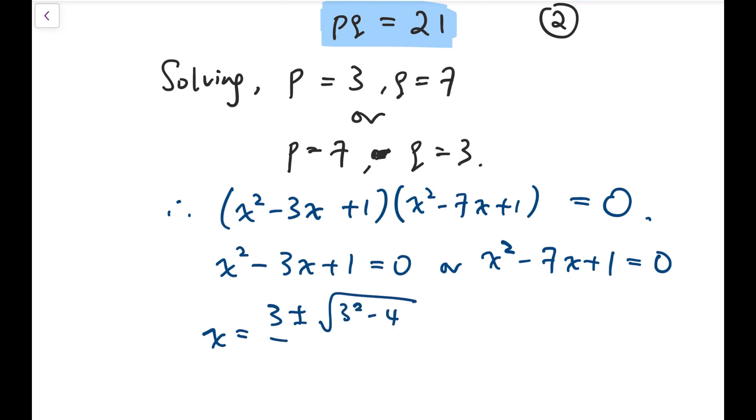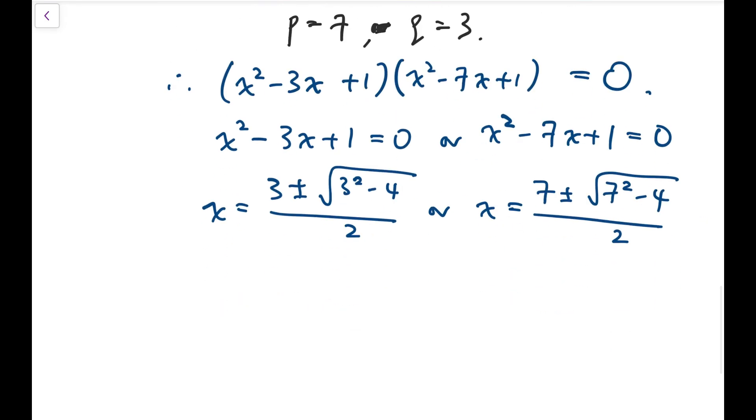So for the first one, we have 3 plus or minus the square root of 3 squared minus 4, all divided by 2, and similar for the second one. And so our solutions are 3 plus or minus root 5 over 2, or 7 plus or minus root 45. And simplifying, you will get 7 plus or minus 3 times root 5 over 2. So these are the final answers to that quartic equation.